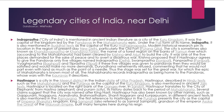Indraprastha was one of the five places demanded for the sake of peace to avoid the disastrous war. Krishna proposed that if Hastinapur agreed to give the Pandavas only five villages — Indraprastha (Delhi), Svanaprastha (Sonipat), Panaprastha (Panipat), Vyagraprastha (Bagpat), and Tilprastha (Tilpat) — they would be satisfied and make no more demands. Duryodhana vehemently refused, saying he would not give even land as much as the point of a needle. Thus the stage was set for the great war for which the Mahabharata is known. The Mahabharata records Indraprastha as home to the Pandavas, whose war with the Kauravas it describes.